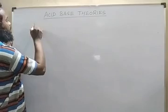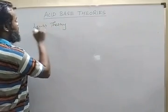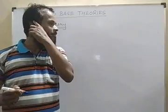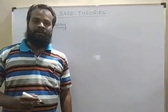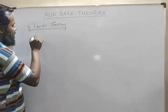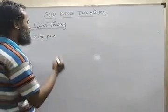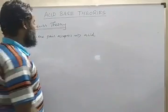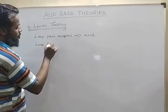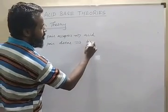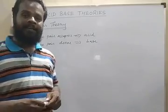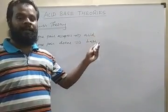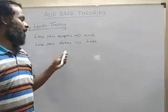According to Lewis theory, the third theory: a lone pair acceptor is called an acid. If the substance accepts a lone pair from another compound or atom, it is called an acid. And the lone pair donor is called a base. So Lewis theory says: if a substance accepts a lone pair of electrons, it is an acid; and if it donates a lone pair of electrons, it is a base.